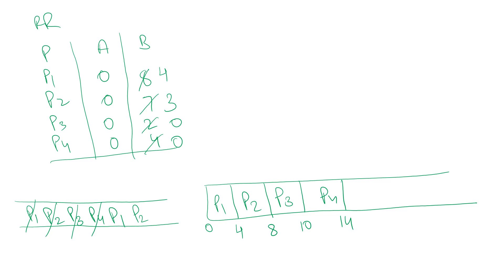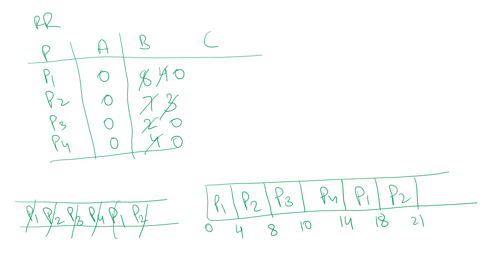Next, P1 executes for the next four milliseconds up to eighteen milliseconds, after which its remaining burst time becomes zero and it is completed. Finally, P2 executes up to twenty-one milliseconds, completing all processes.